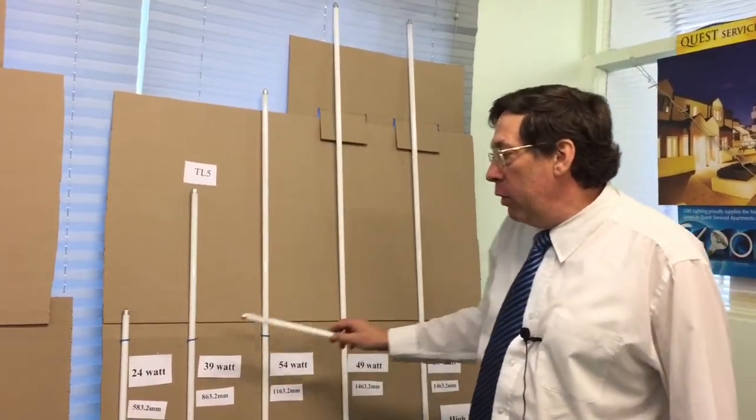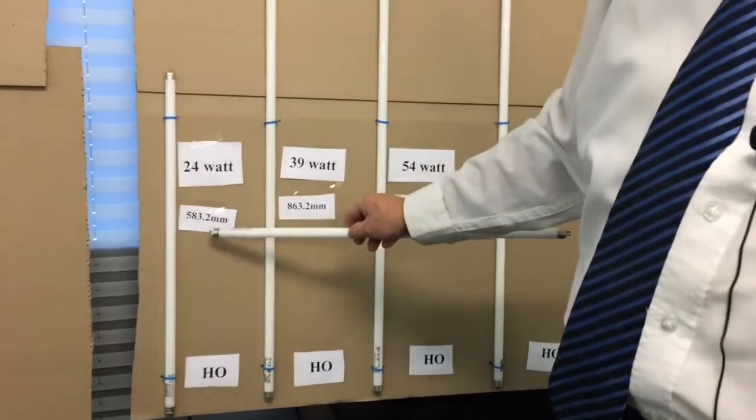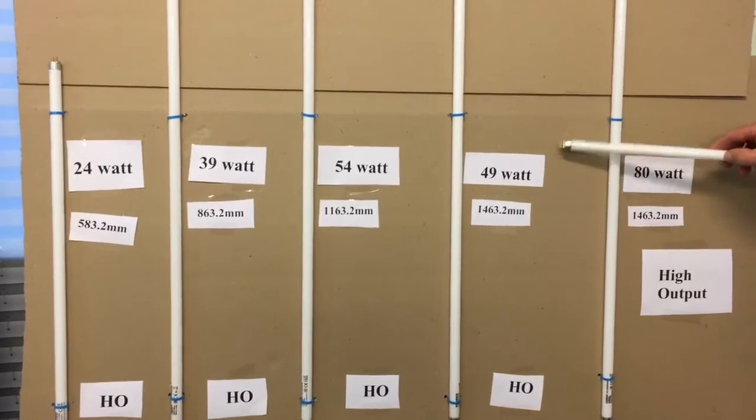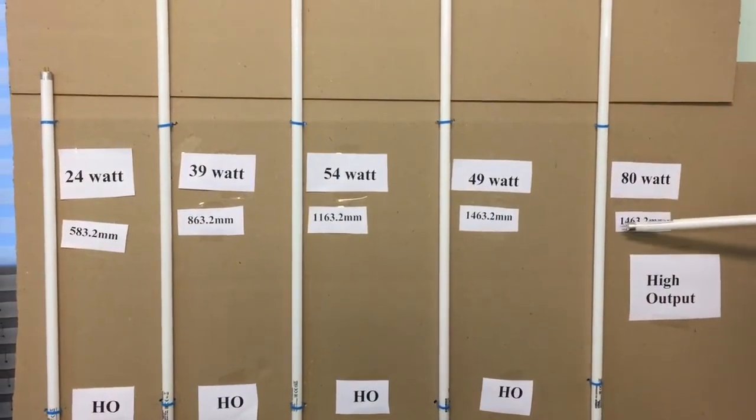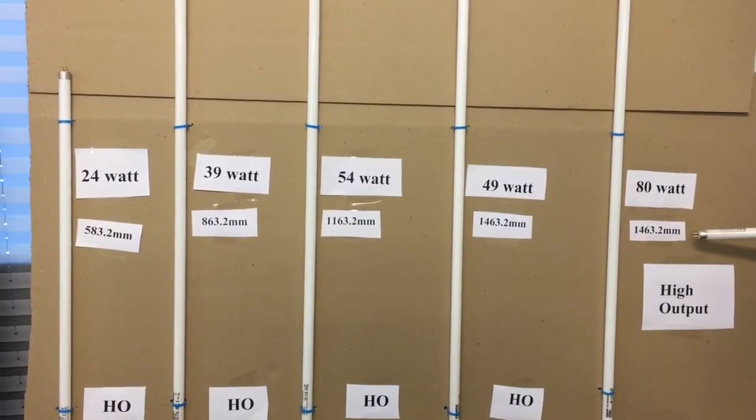The 24 watt starts off at 583.2 millimeters, going up to both the 49 and the 80 watt at 1463.2 millimeters.